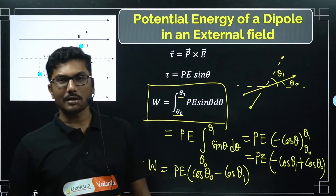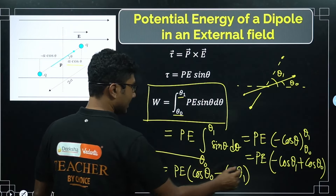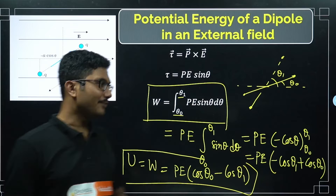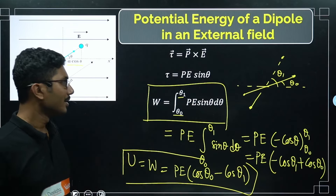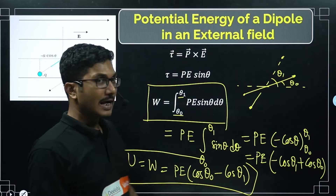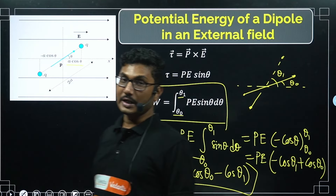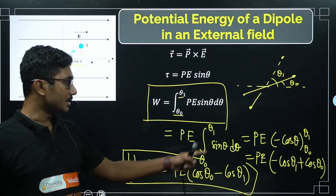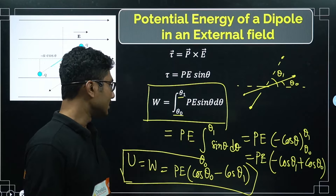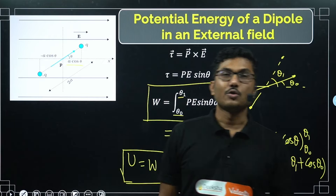Integration of sinθ dθ gives −cosθ. So the work done is W = PE[cosθ₀ − cosθ₁]. This is also the potential energy stored in the dipole. The energy stored in the dipole when it is rotated from θ₀ to θ₁ is PE(cosθ₀ − cosθ₁). Bonus: mention in the comments what is the energy stored if the dipole is moved from 0° to 90°.